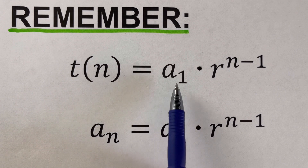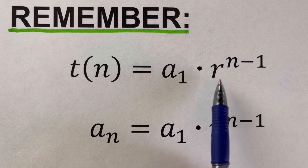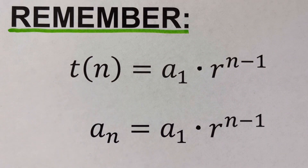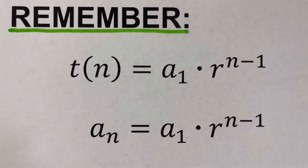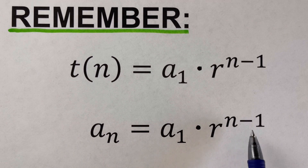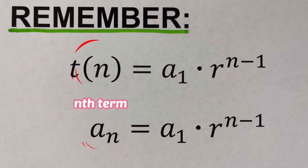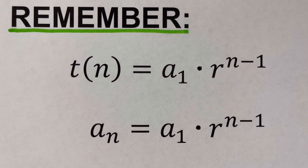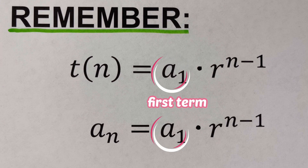The nth term formula is: t(n) = a₁ · r^(n−1). This t(n) can also be represented as a_n — some textbooks use t(n), others use a_n; they represent the same thing. So the formula is a₁ times r raised to the power n minus 1. Here, t(n) and a_n represent the nth term of the sequence, while a₁ is the first term of the sequence.